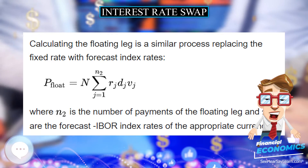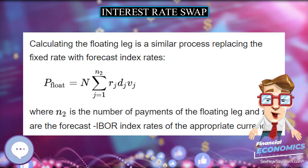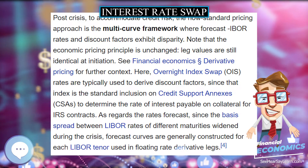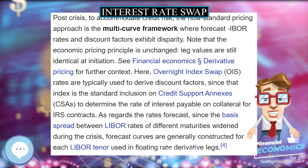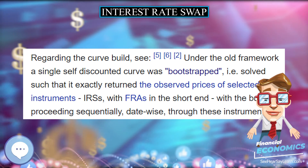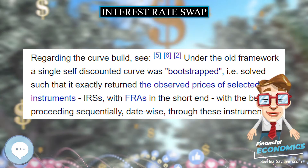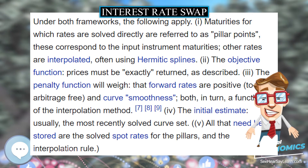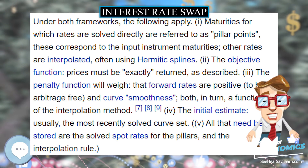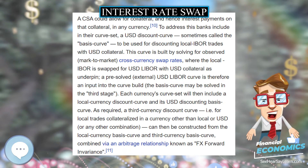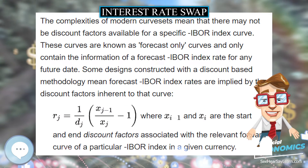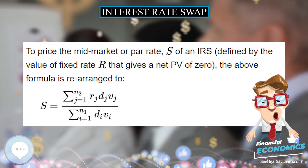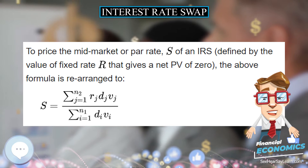Under both frameworks the following apply: (1) Maturities for which rates are solved directly are referred to as pillar points — these correspond to the input instrument maturities; other rates are interpolated, often using Hermite splines. (2) The objective function: prices must be exactly returned as described. (3) The penalty function will weigh that forward rates are positive, to be arbitrage-free, and curve smoothness — both in turn a function of the interpolation method. (4) The initial estimate is usually the most recently solved curve set. All that need be stored are the solved spot rates for the pillars and the interpolation rule.